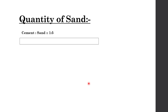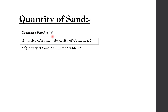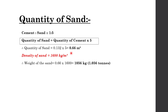Now let's calculate the quantity of sand. To get the quantity of sand, you have to multiply the quantity of cement by 5, because cement and sand are in the ratio of 1 is to 5. Therefore, quantity of sand equals 0.132 multiplied by 5, which equals 0.66 cubic meter. Considering the density of sand as 1600 kg per cubic meter, weight of sand equals 0.66 multiplied by 1600, which equals 1056 kg, or 1.056 tons.